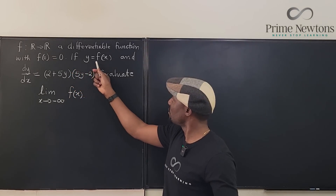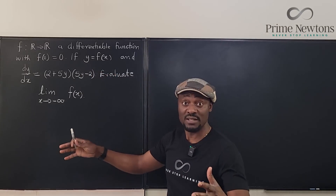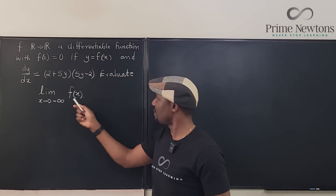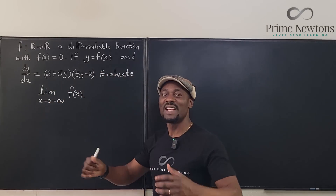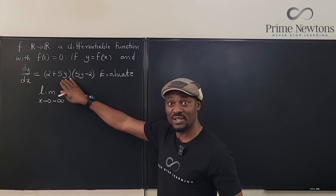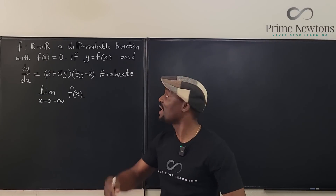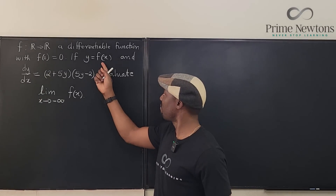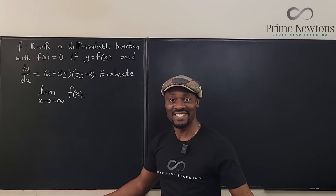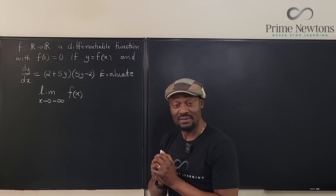If y is equal to f of x, we can interchange y and f of x. And dy/dx is given, so we're supposed to find this. Just looking at it, this is a differential equation. If we can solve the differential equation, we're going to get y. And once we have y, that's our f of x. Then we can take the limit as x goes to negative infinity.